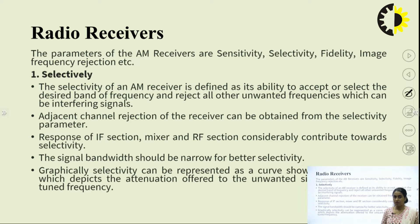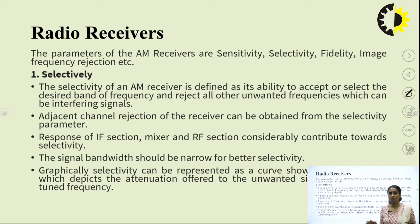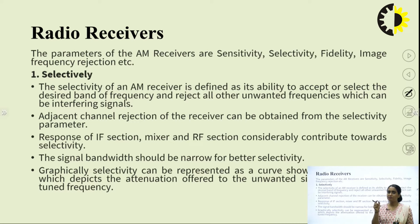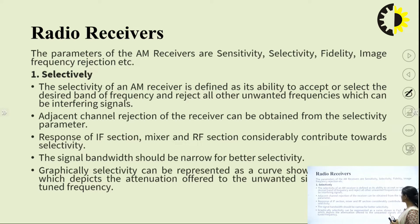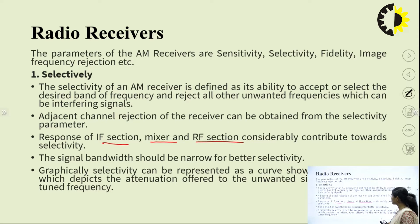The first feature is selectivity. The selectivity of an amplitude modulated receiver is defined as its ability to accept or select the desired band of frequency and reject all other unwanted signals. Like choosing a language only you and I understand — similarly, a receiver uses a filter tuned to the desired frequency so that it rejects all other frequencies. Adjacent channel rejection can be obtained from the selectivity parameter, and the response of the IF section, mixer section, and RF section all contribute towards selectivity.